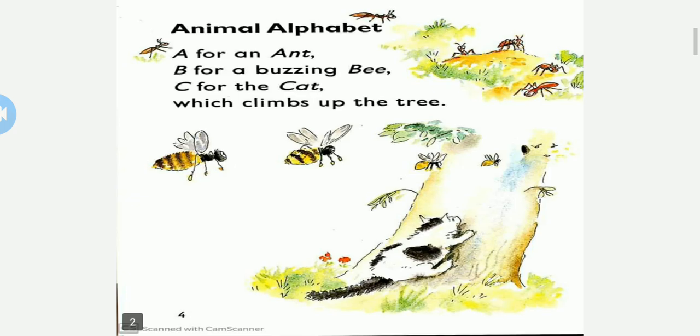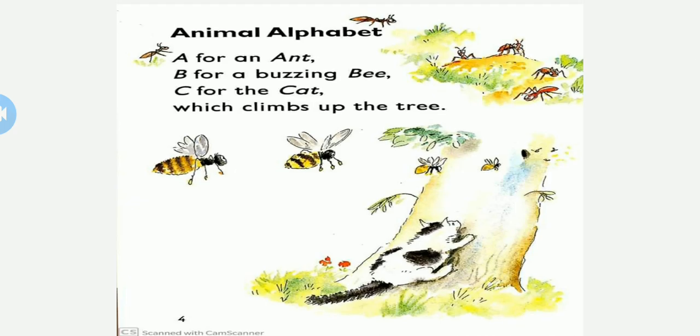So without wasting time, let's begin. The name of the poem is 'Animal Alphabet.' A for an ant, B for a buzzing bee, C for the cat which climbs up the tree.